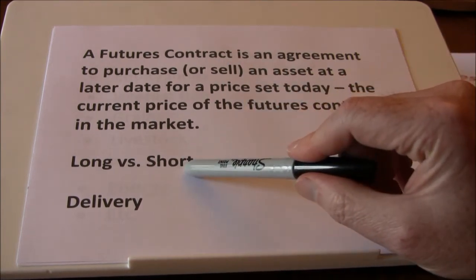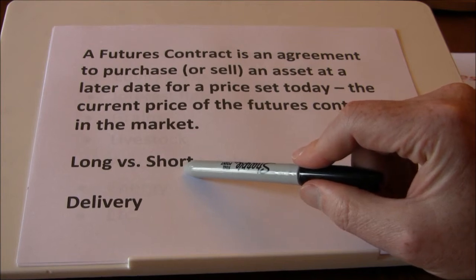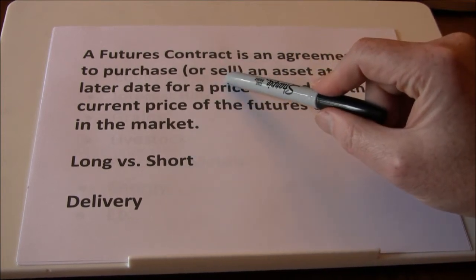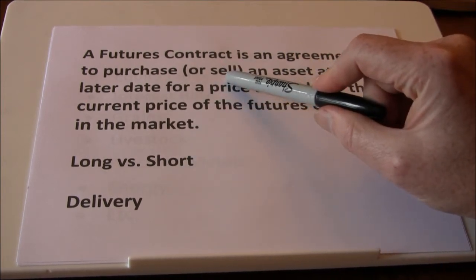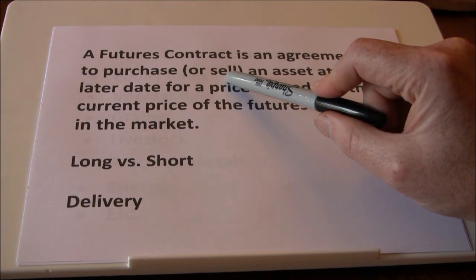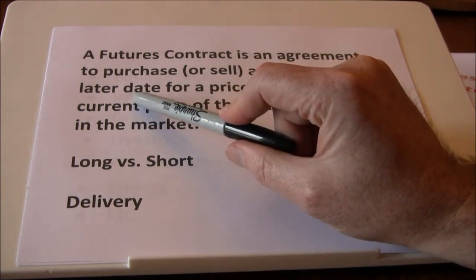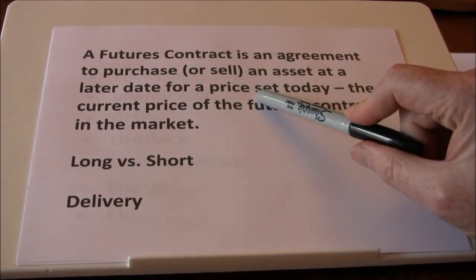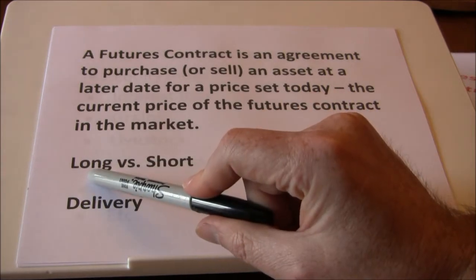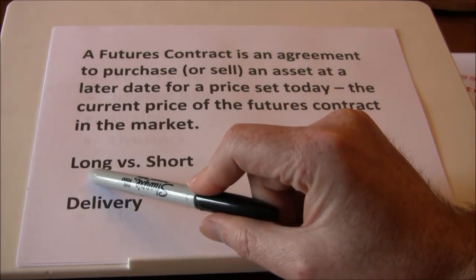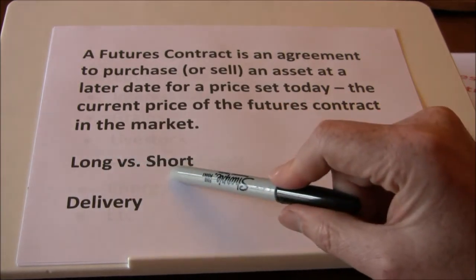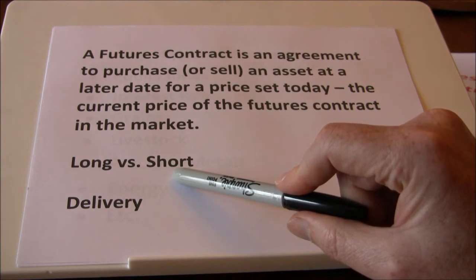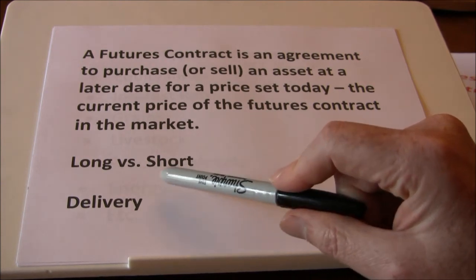If I go short a wheat futures contract, I'm agreeing to sell or deliver the underlying asset at the maturity date of the contract for the price set today. So if you go long you're trying to take delivery; if you go short, you're agreeing to deliver that underlying asset.